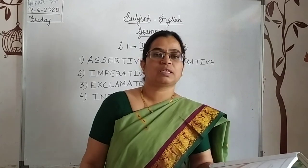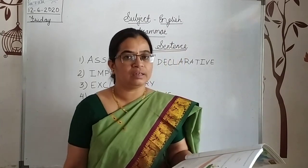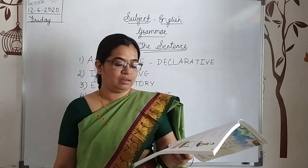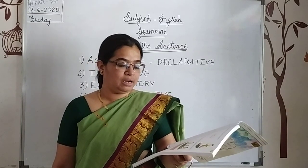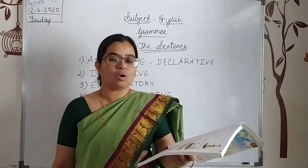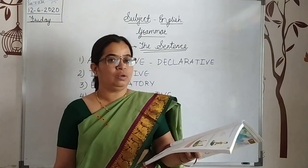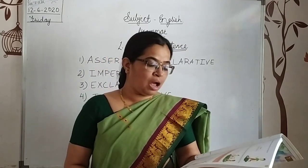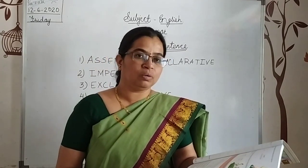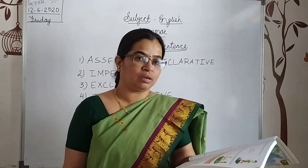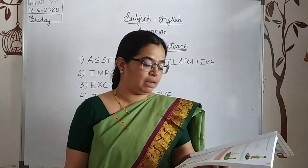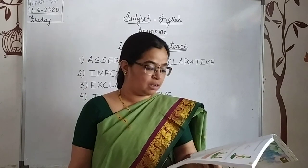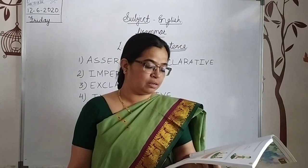The second sentence is: 'The child swam across the river.' Ask the question to the verb — who is doing it, who is swimming? The child. So 'the child' is the subject — circle 'the child' — and underline 'swam across the river.'